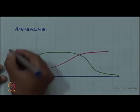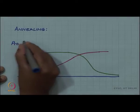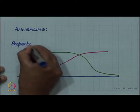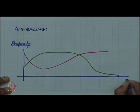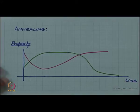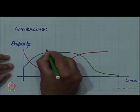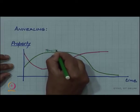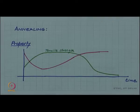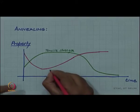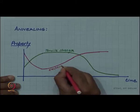Now, let us see how some of the properties change. On the y-axis, I am drawing property, and on the x-axis, it is time. The green curve represents tensile strength, whereas the red curve represents electrical conductivity.